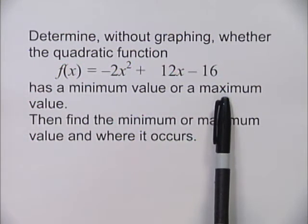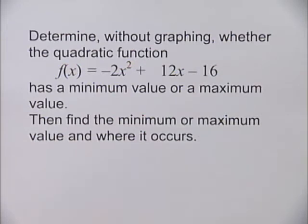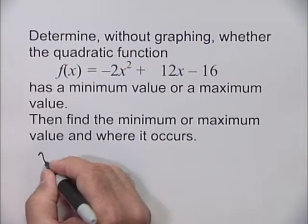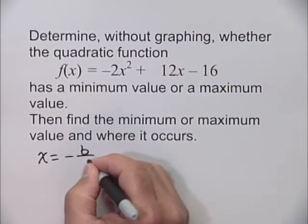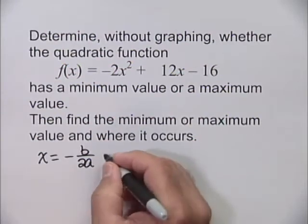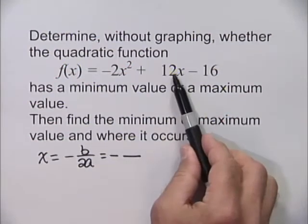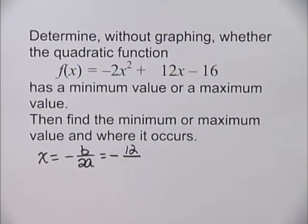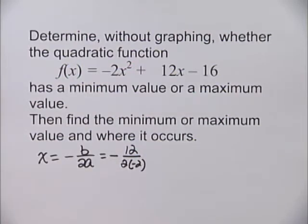That maximum value occurs at the vertex of this parabola. To find the x-coordinate of the vertex, we use the formula x = -b/(2a). Substituting in those values, the opposite of b, the coefficient of the linear term, 12, divided by 2 times a, which is -2, so 2 times -2. Evaluating that, we find that x = 3.